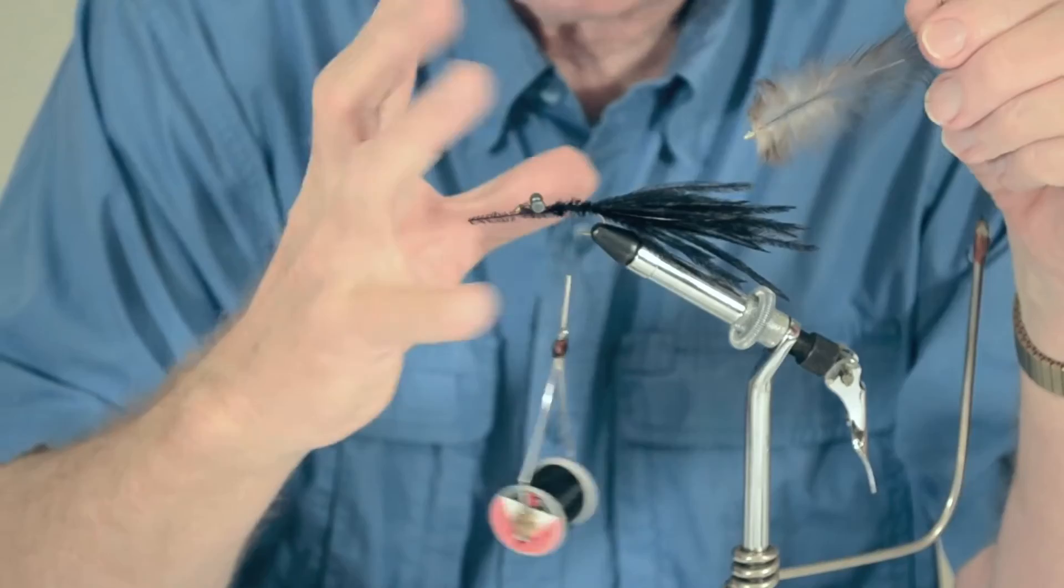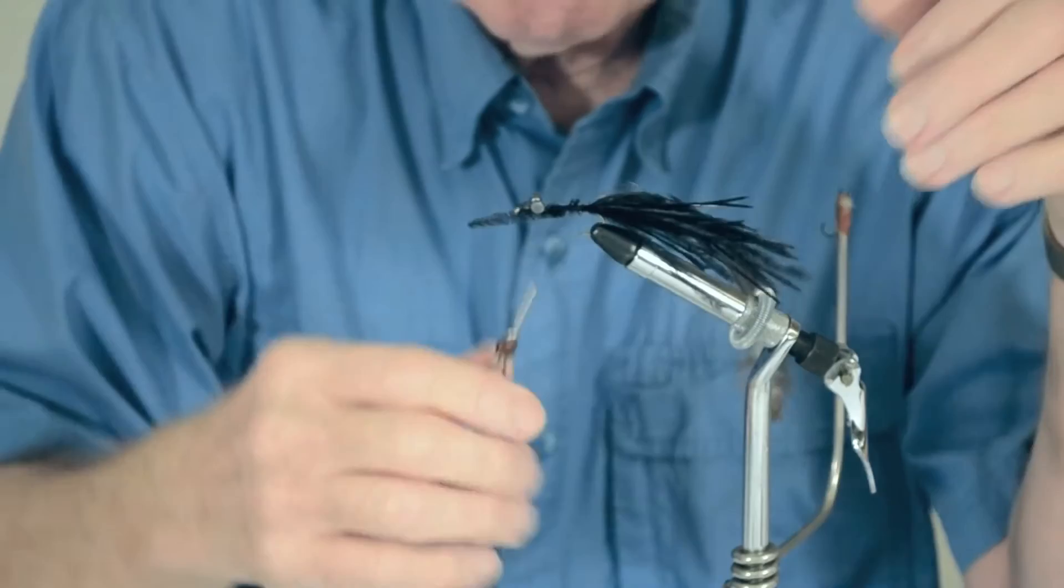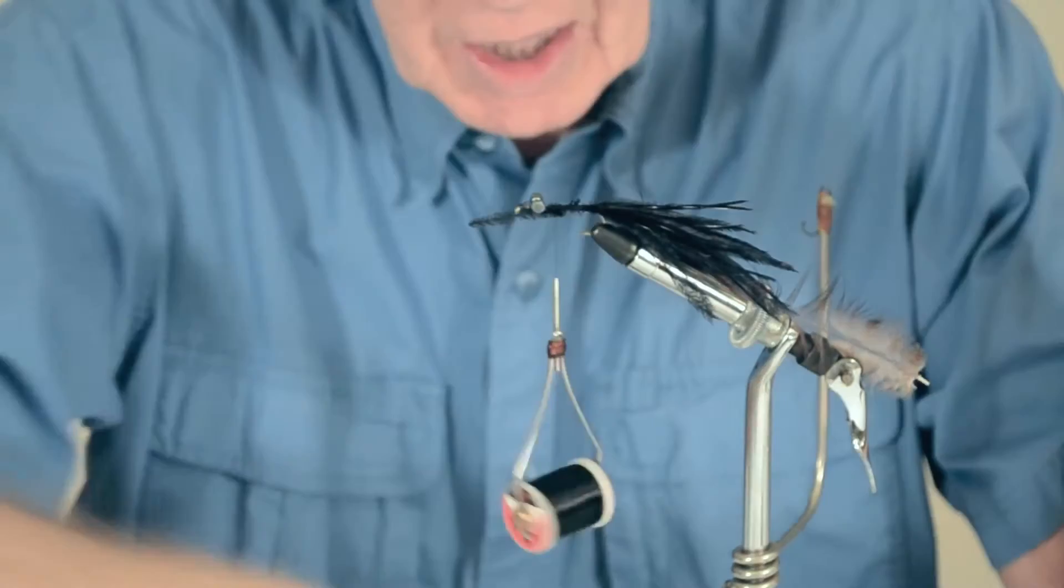Since you want this larger up in the front, you want to tie it in by the tip, right back over the bend of the hook. If you've got a material holder, you can hook it in there if you think it's going to get in your way.